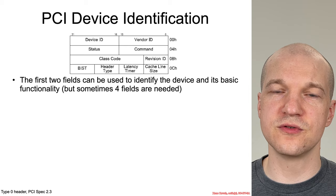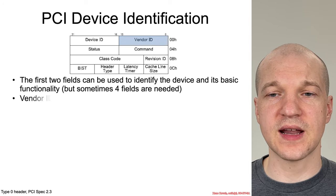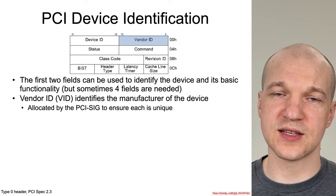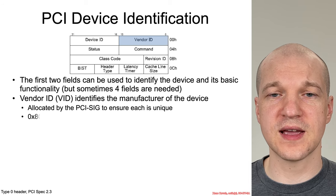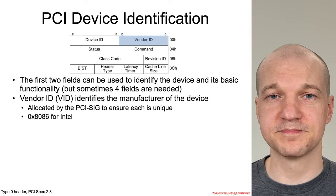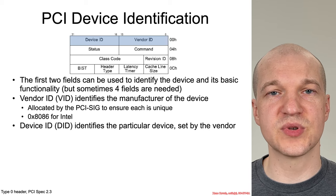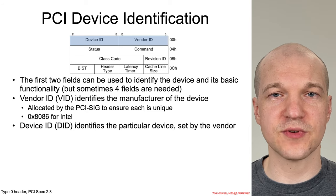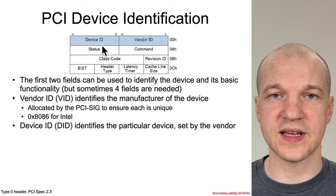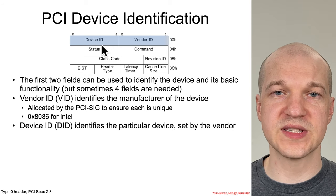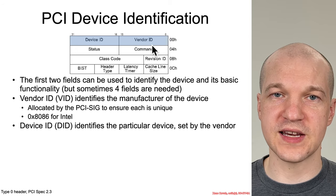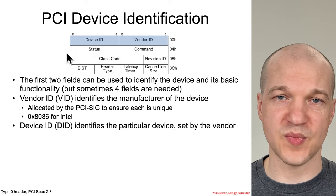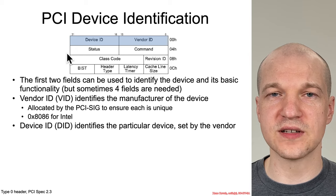Under most circumstances, you can actually identify a PCI device by just reading the first two fields: the vendor ID and device ID. The vendor ID is set by the manufacturer and is allocated by the PCI SIG so that vendors can be uniquely distinguished. Intel, for example, has vendor ID 8086. The device ID is set by the particular vendor for whatever PCI device they're describing.